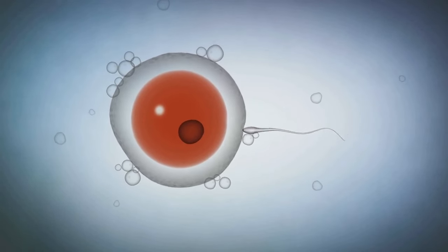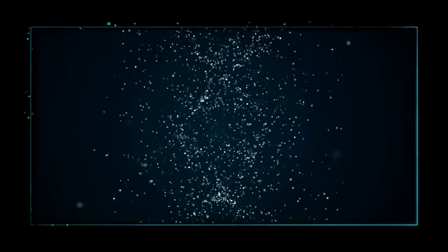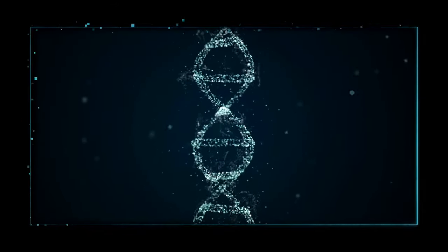The sperm's mitochondria, those tiny powerhouses that helped it on its epic journey, are systematically destroyed. Why does this happen? It's nature's way of preventing the mixing of mitochondrial DNA from both parents.